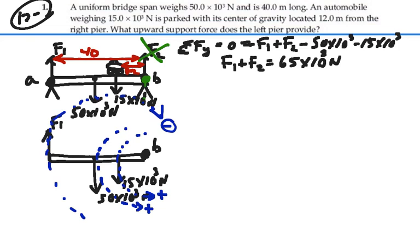So the way we write that is the summation of all the torques about point B is zero. And we'll add our torques. We've got two positive torques. We've got 15,000 newtons times its moment arm, which is 12 meters away, plus 50,000 newtons times its moment arm, which is 20 meters away.